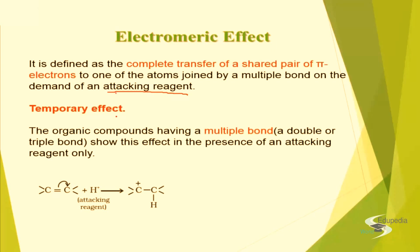Earlier, we saw permanent polarization — the plus R effect, resonance effect, and inductive effect. Both of these were permanent polarization. The electromeric effect is temporary; it is only in effect as long as the attacking reagent demands.